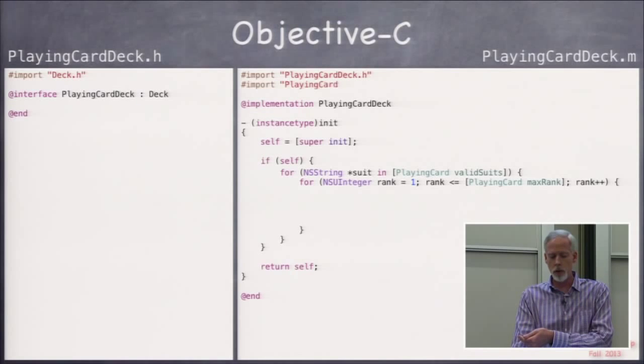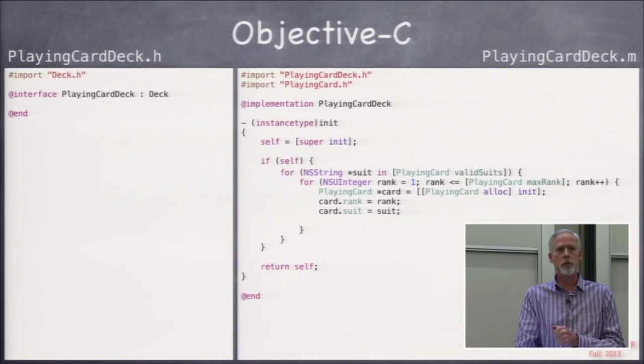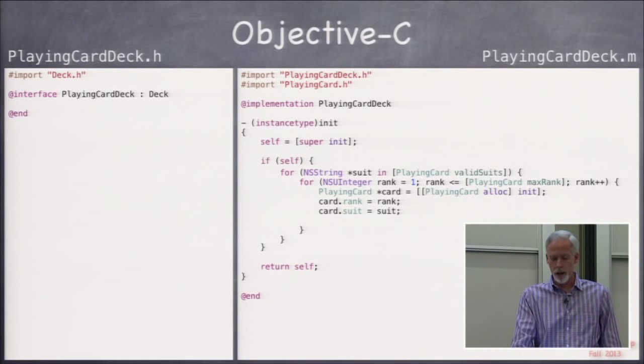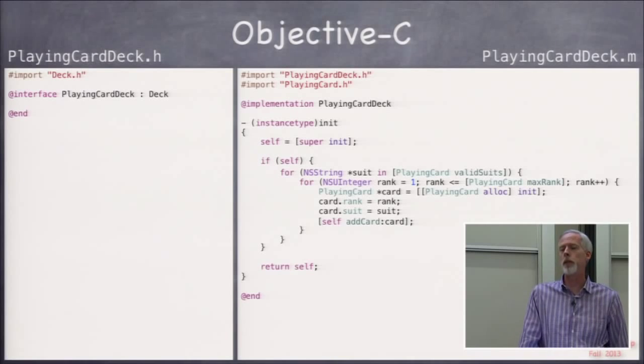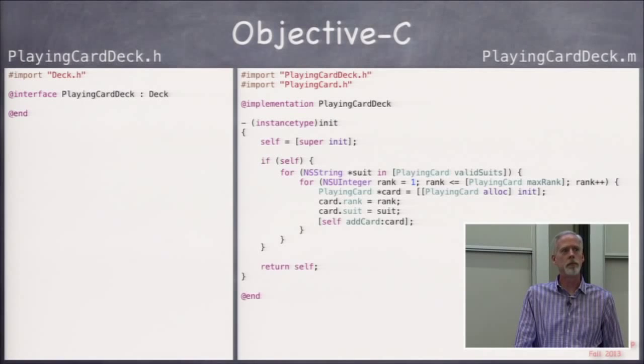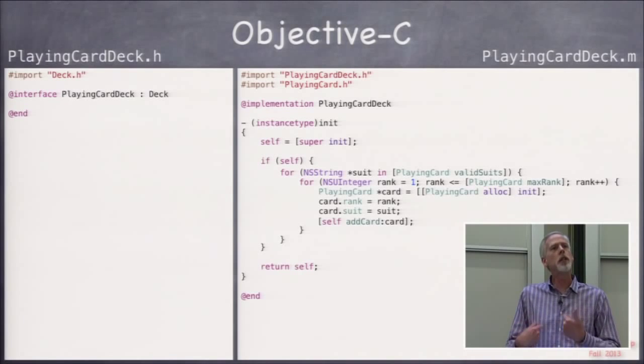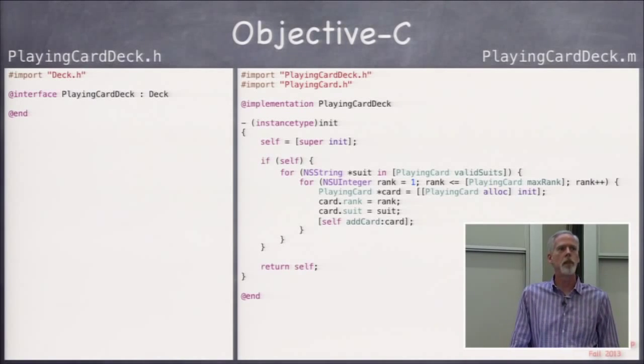Then I'm going to import playing card, because I'm going to create a playing card, playing card alloc init, then I'm going to set that card's rank, set that card's suit, rank and suit are my little iteration variables there, and then I'm going to add it to myself. And I'm a deck, so that's perfectly fine. Everybody cool with that code? So now I'm a well-formed playing card deck, and I can be used to draw random cards, and all that stuff, which you will need to do for your homework.